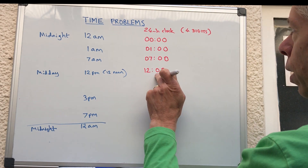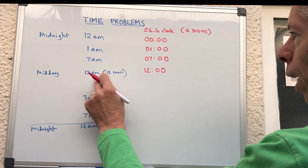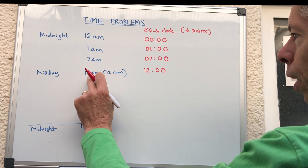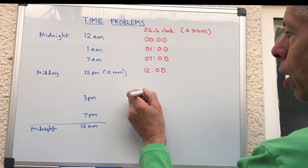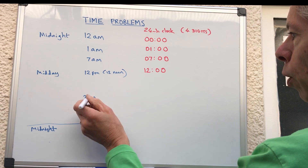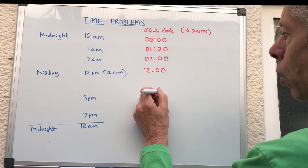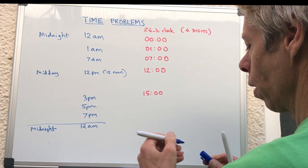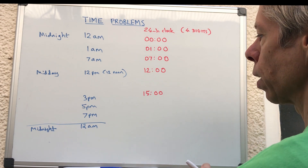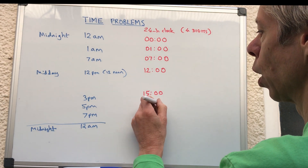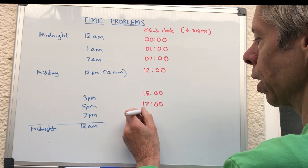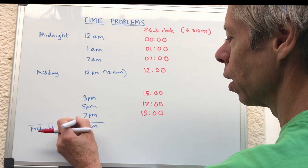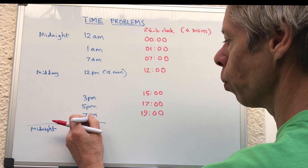12 noon stays as 1200 because it's halfway. If you're asked to convert 12 to 12-hour clock, it's p.m., because 12 p.m. is midday — when the afternoon starts. For afternoon times you add 12: so 3 p.m. becomes 1500, 5 p.m. becomes 1700, and 7 p.m. becomes 1900.